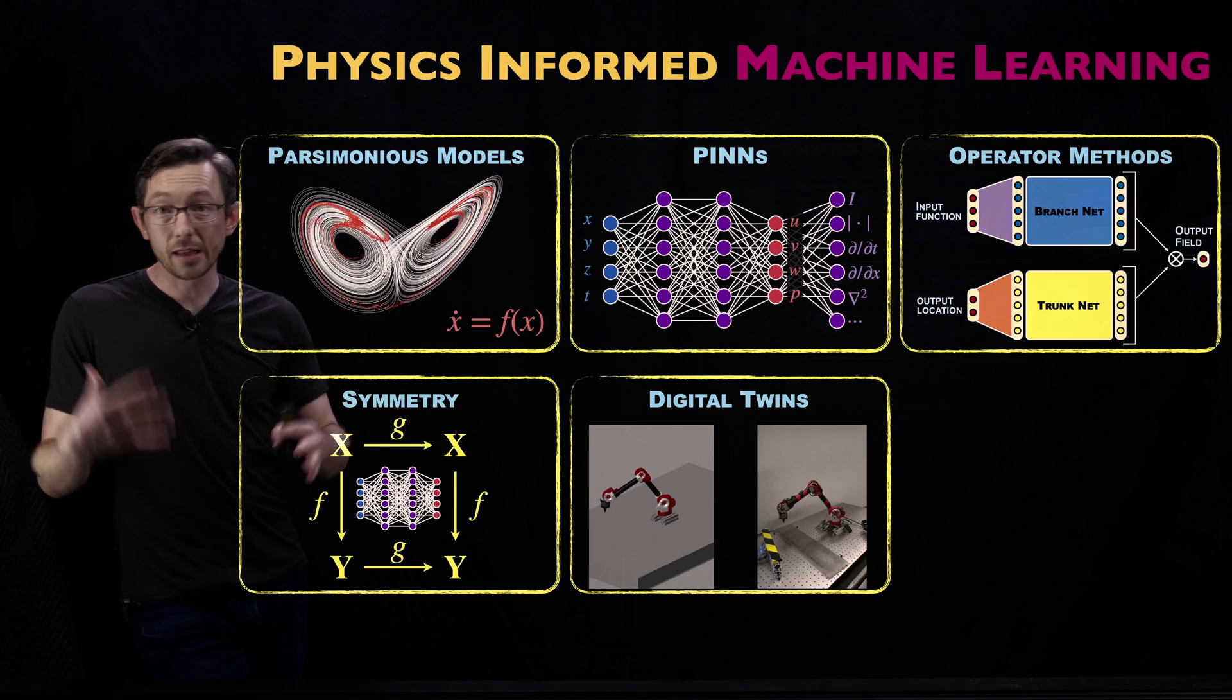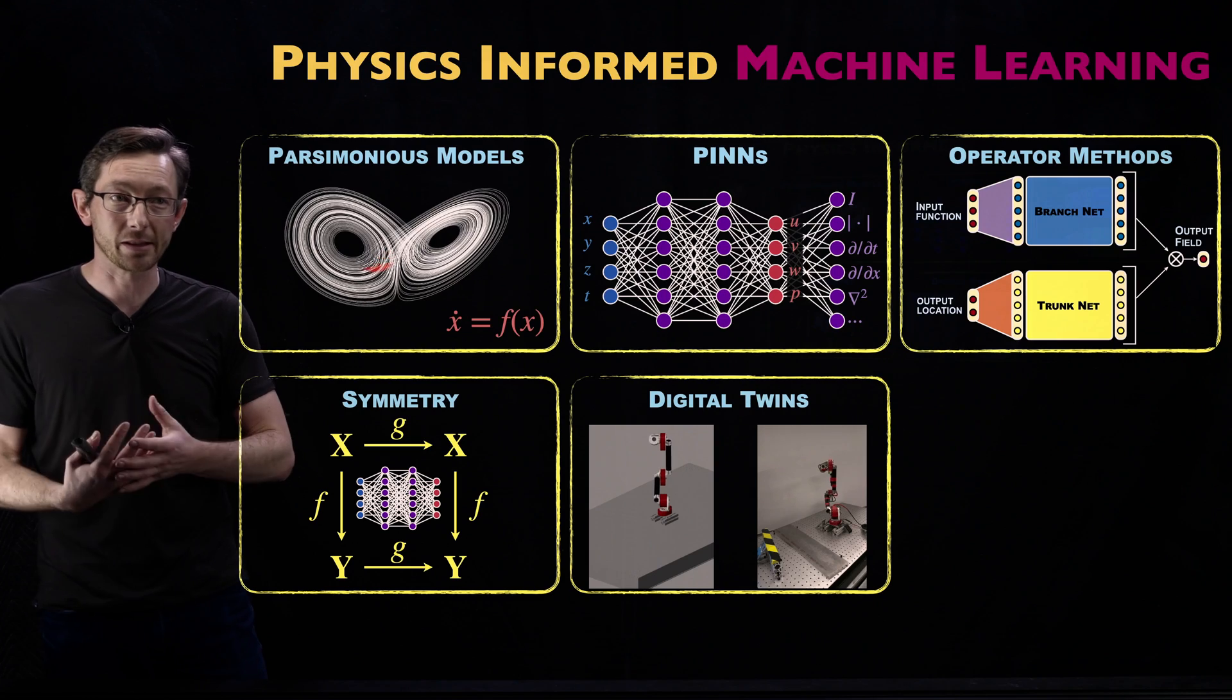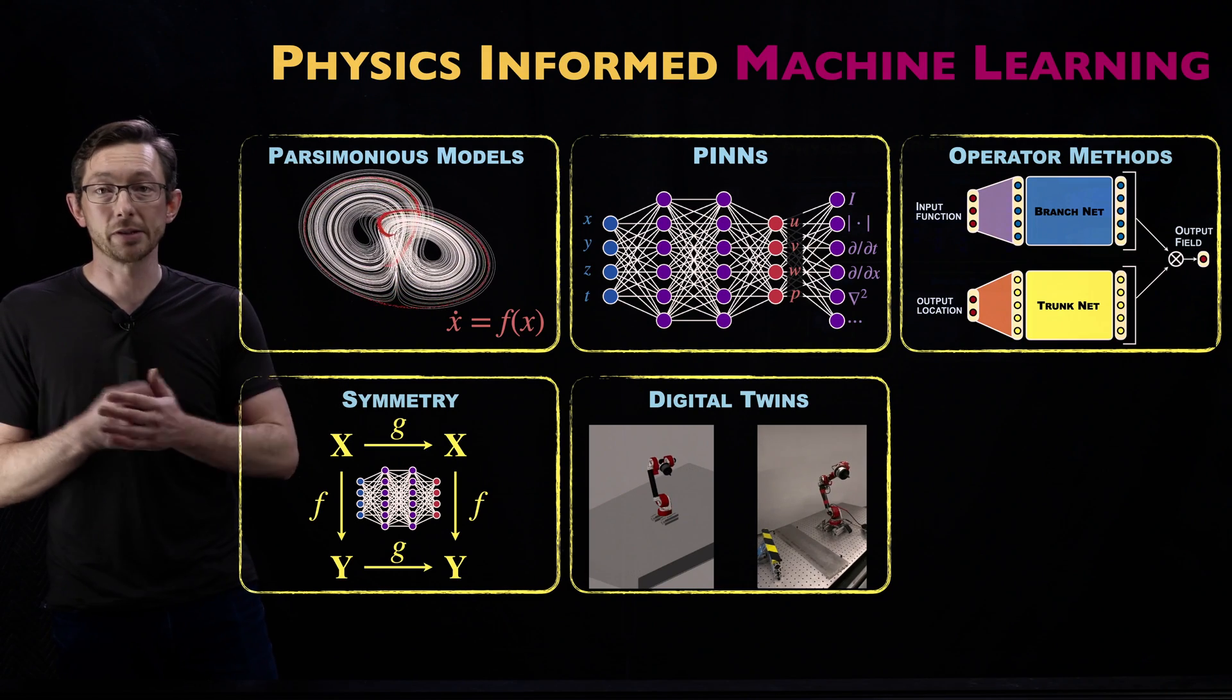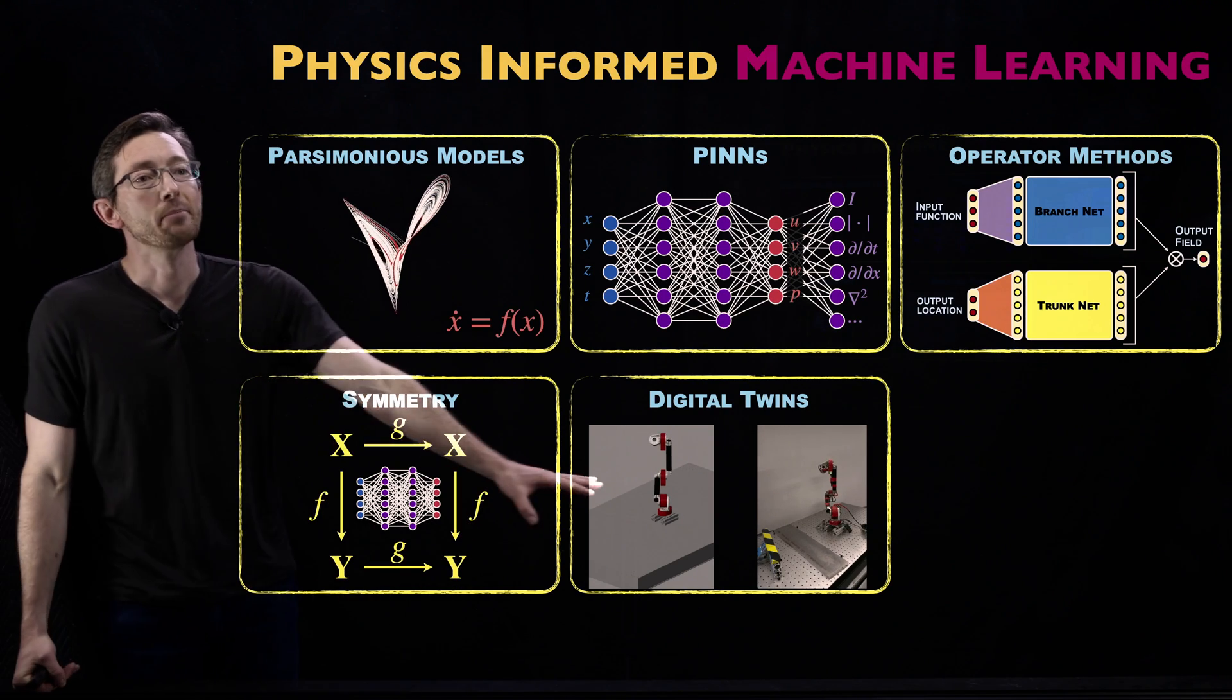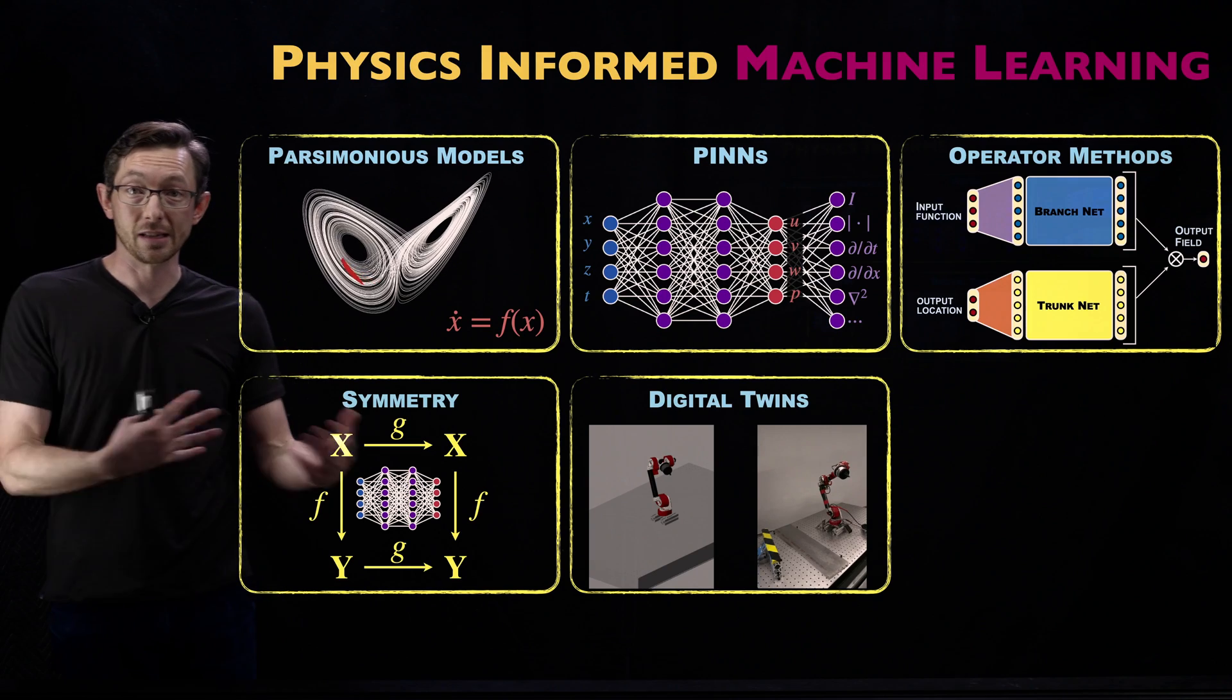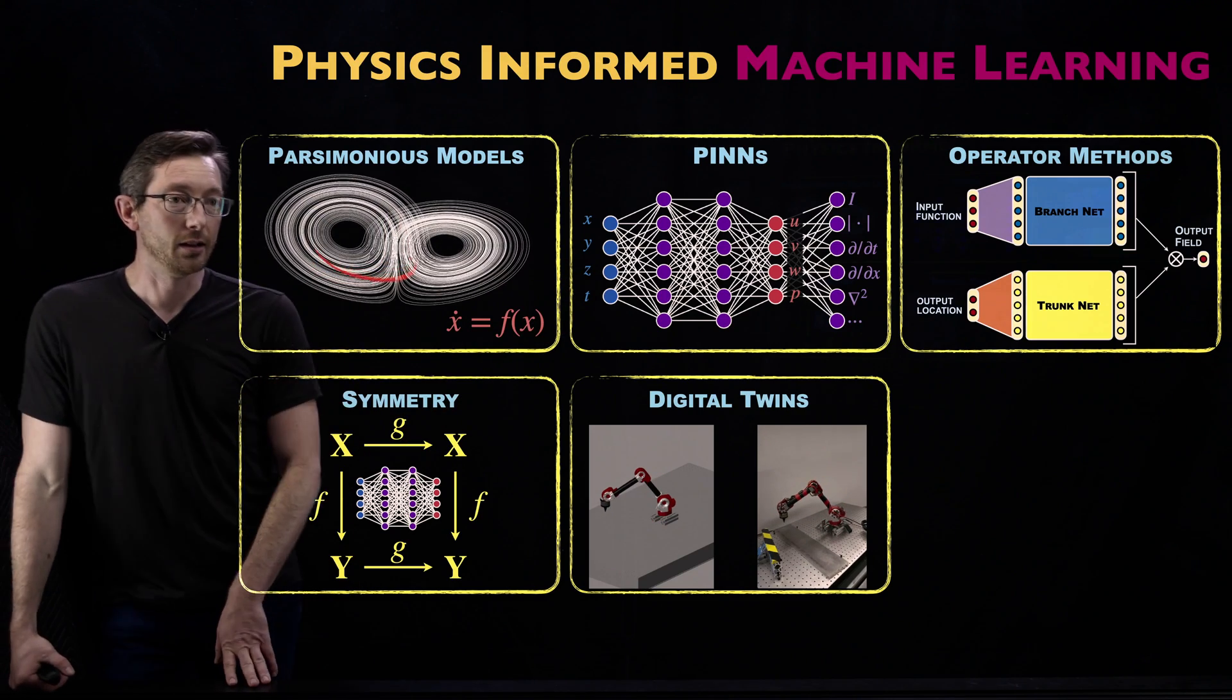Digital twins is a really important topic in engineering design optimization. Machine learning models that are physical play a central role in the digital twin framework. Reduced order modeling, discovering models from data, making sure those models have physics and symmetries and respect the physics are really critical to the digital twin revolution. This could easily be ten hours or even a whole course depending on how ambitious we are.